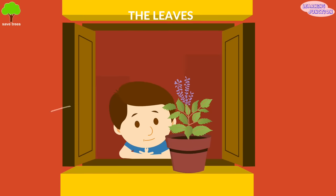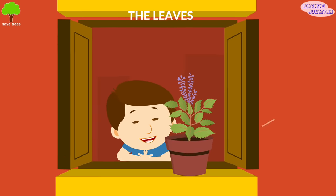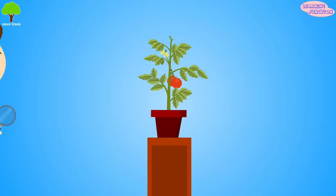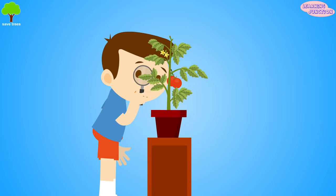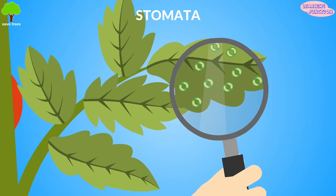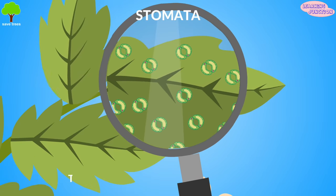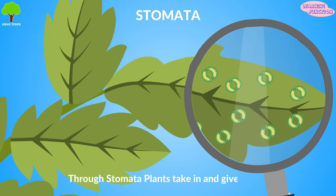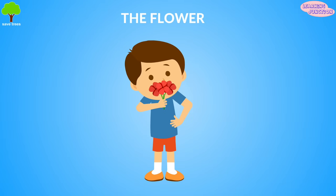They're usually green due to the presence of chlorophyll that helps them to prepare their own food. Leaves also make the oxygen in the air that we breathe.